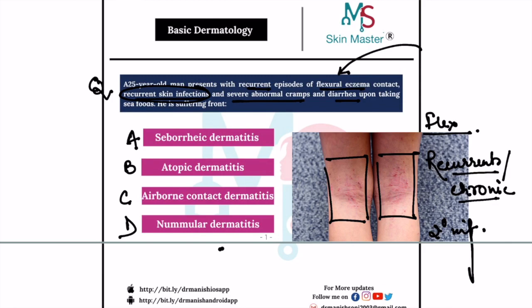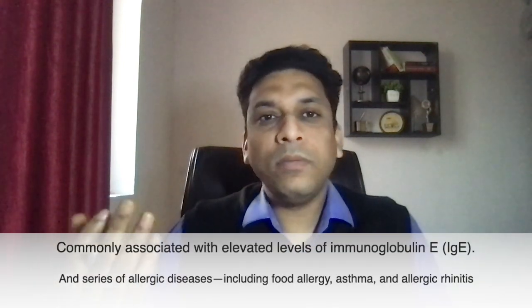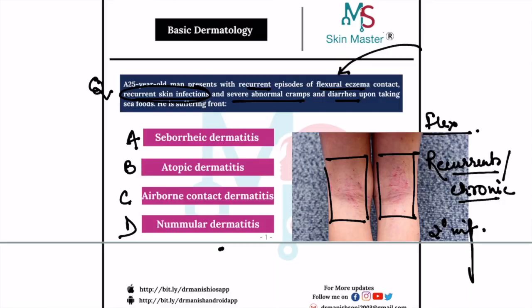Because this is a case of atopic dermatitis, we know that these patients have a history of atopy — a history of various allergies. This history of atopy can be due to various things; commonly it is due to dust mite, but in this patient it is due to seafoods. So because all these features are pointing towards atopic dermatitis, the answer is atopic dermatitis.